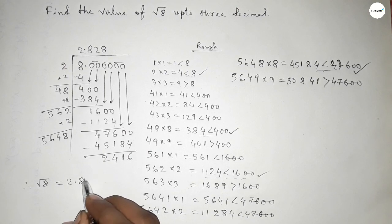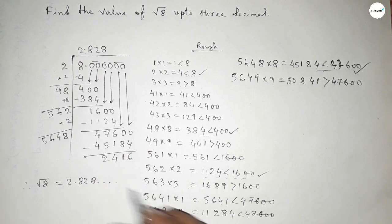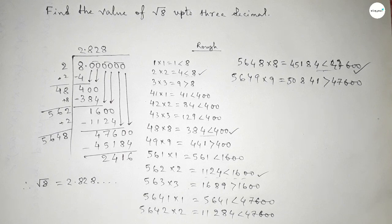We can continue to find more decimal places, but here we need the value of root 8 up to three decimal places. So root 8 equals 2.828. That's all. Thanks for watching — if this video was helpful to you, please share it with your friends. Thanks for watching.